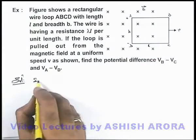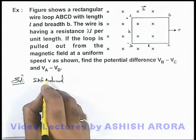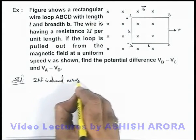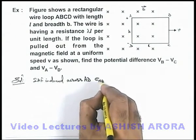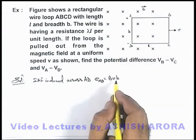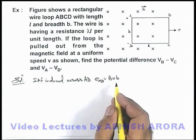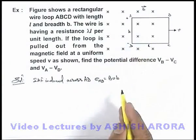In this situation, the EMF induced across AD is: the motional EMF can be written as BvL. Here the breadth is b, in which the EMF is induced, so EMF induced across AD is Bvb.